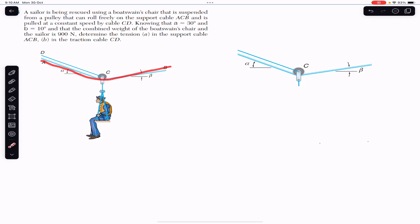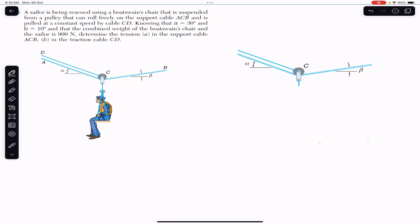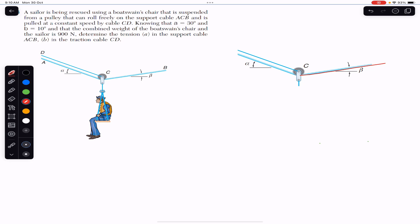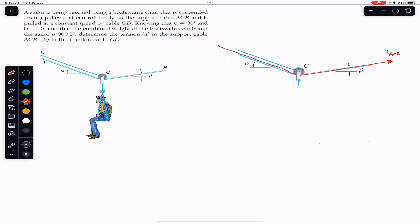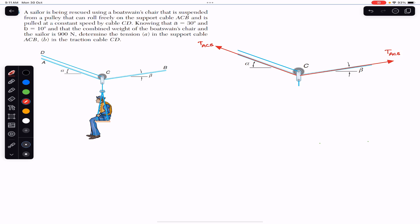We are required to find the tension in this ACB rope and the tension in this CD rope. Now we are going to draw the free body diagram. In the free body diagram, we will have the tension T_ACB acting on one side making angle beta, and since this rope is one continuous rope, the tension will remain the same on both sides of the pulley.